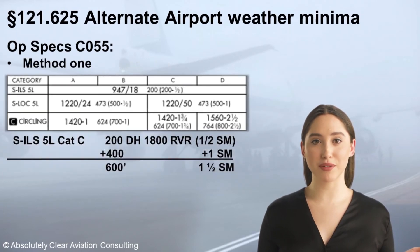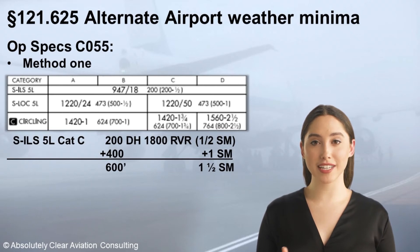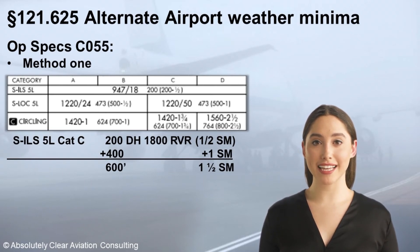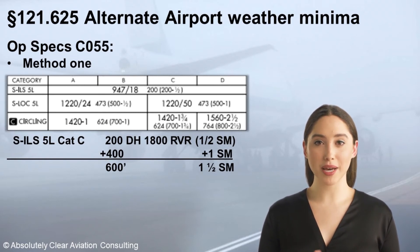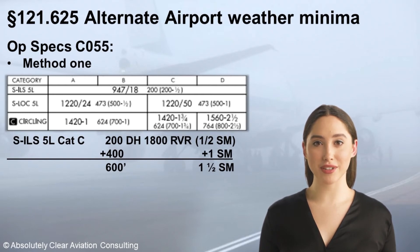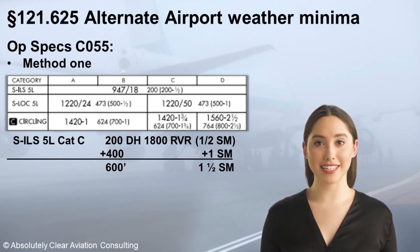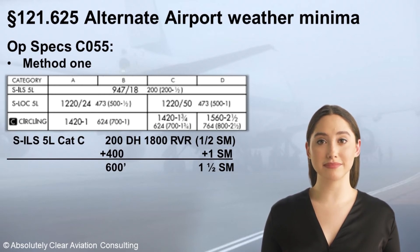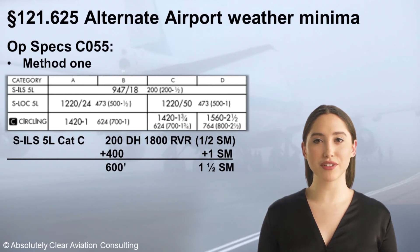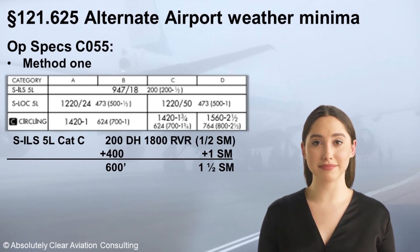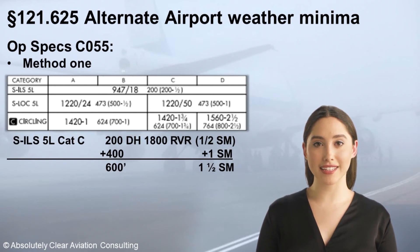Here's an example of a Method 1 calculation. The straight-in minimums for all approach speed categories of aircraft is a 200-foot decision height and 1800 RVR visibility. Since the formula requires that one statute mile be added to the published minimum visibility, and there is no comparable visibility in statute miles to 1800 RVR, the next higher comparable visibility in statute miles is ½ for 2400 RVR. Adding 400 feet to the published 200-foot decision height equals 600 feet. Adding 1 statute mile to the RVR converted to ½ statute mile equals 1½ statute mile.